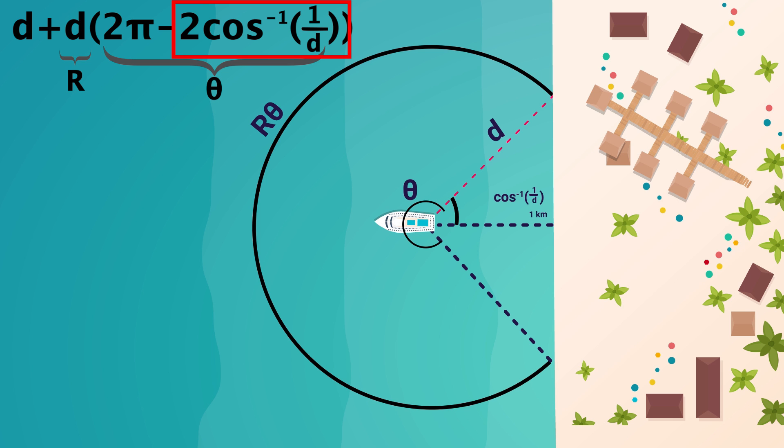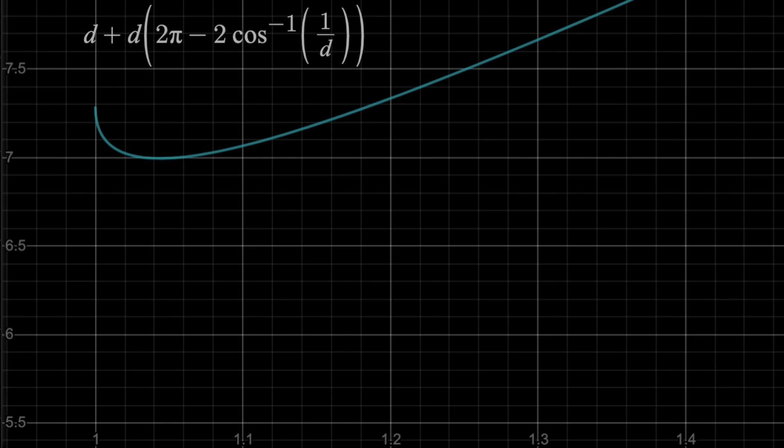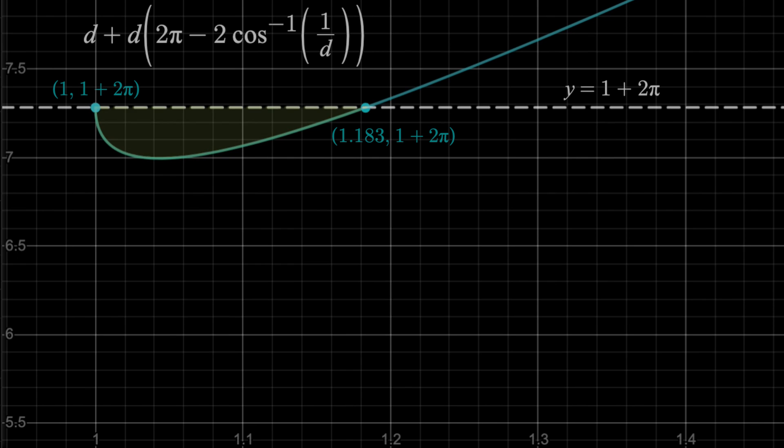Now, if we graph this equation, we get this here. Again, the y-axis is the distance for the worst case scenario path, while the x-axis is D, the length of that first straight line drive. You'll see here at D equals 1, or D equals 1.183 kilometers, the worst case path is 1 plus 2 pi. But anything in between is shorter.